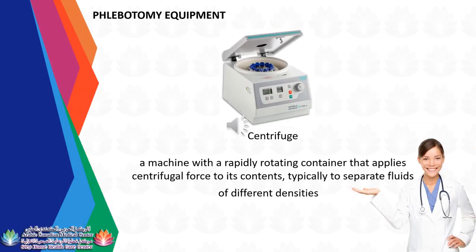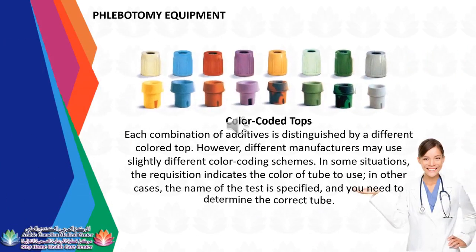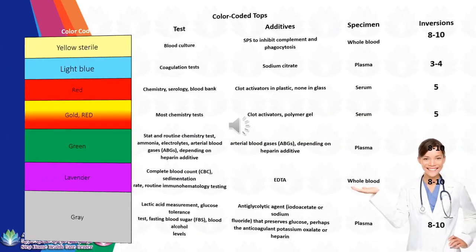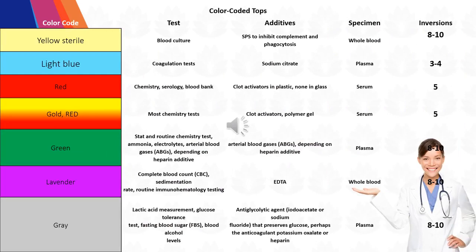Centrifuge: A machine with a rapidly rotating container that applies centrifugal force to its contents, typically to separate fluids of different densities. Color-coded tops: Each combination of additives is distinguished by a different colored top. However, different manufacturers may use slightly different color-coding schemes. In some situations, the requisition indicates the color of tube to use; in other cases, the name of the test is specified and you need to determine the correct tube.